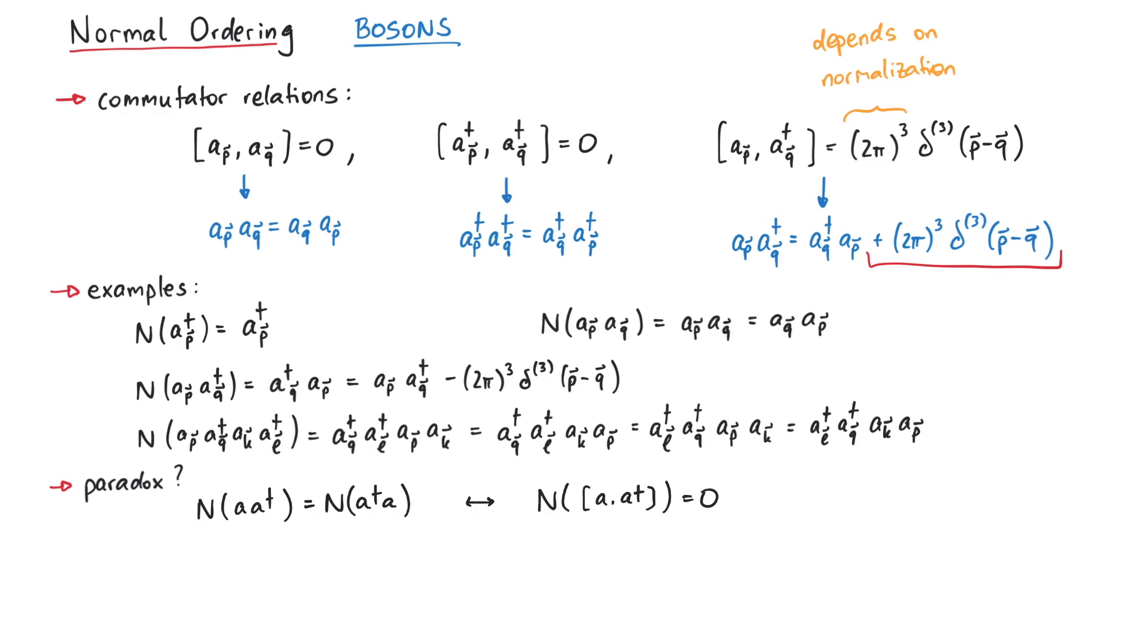In summary, normal ordering is a linear operation if c1 and c2 are complex numbers, and o1 and o2 belong to the so-called free algebra. That is, the algebra where all anti-commutators are zero. This is equivalent to saying, don't use canonical commutator relations inside a normal order product.